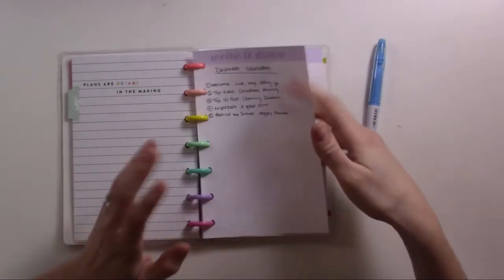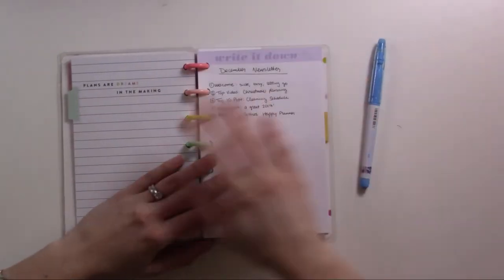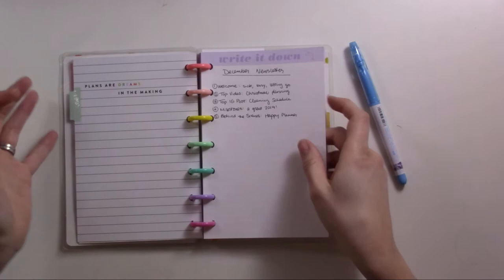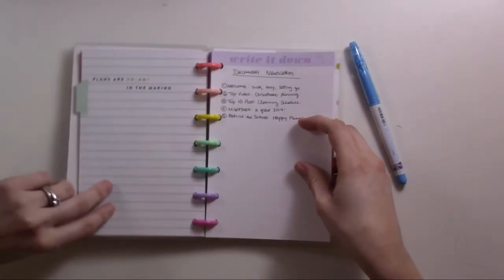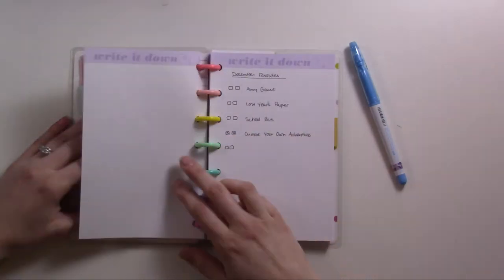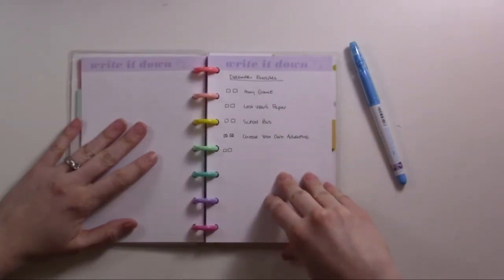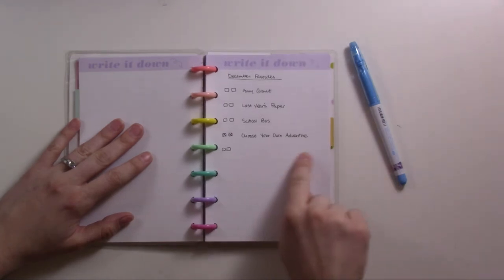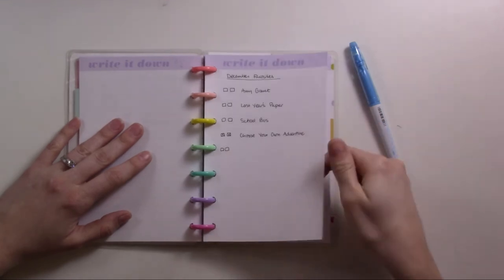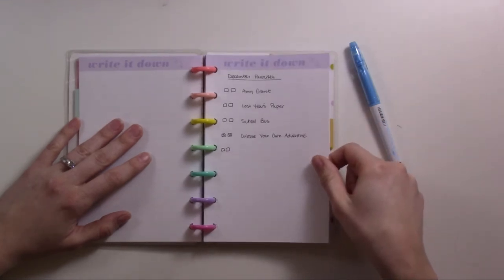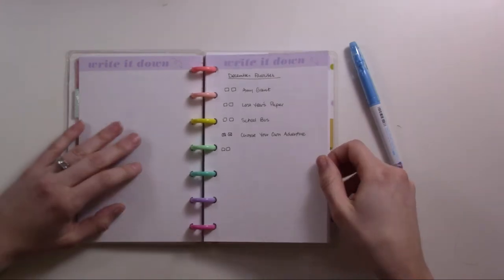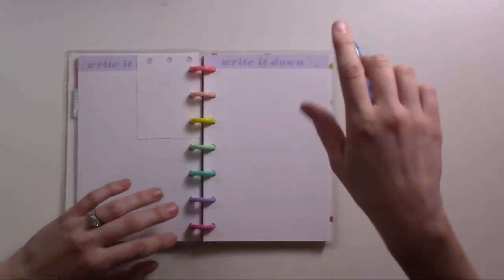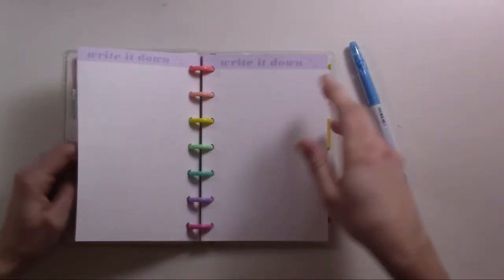Then the second tab, it's got discs on one side and the words 'plans are dreams in the making' on the other. These are like project pages for videos and blog posts and whatever. So this is a project page for my December newsletter, so it's just an outline of these are the things that I'm going to include in it. I can just pull this out and draft from that or take notes.